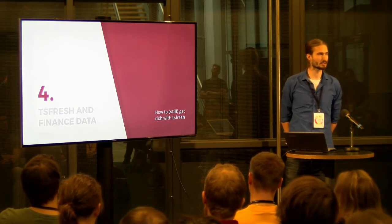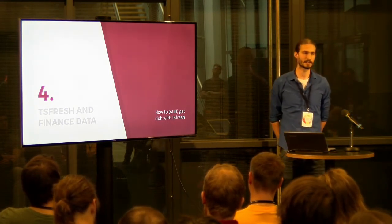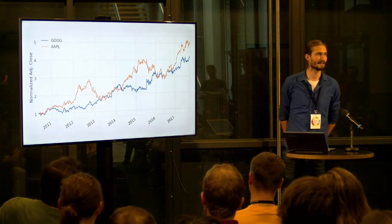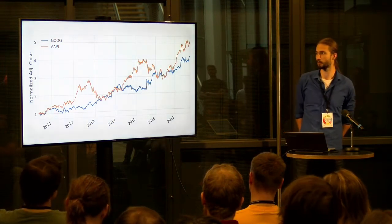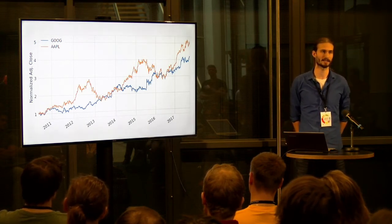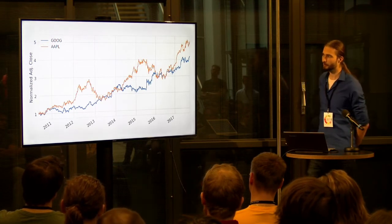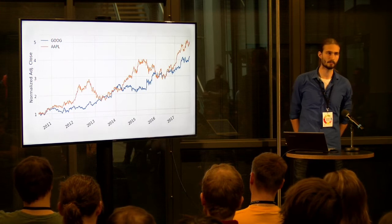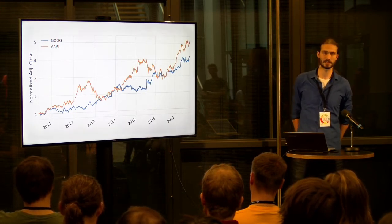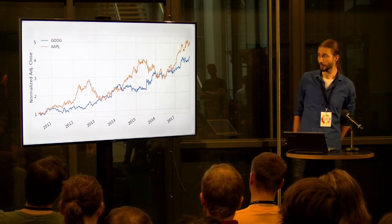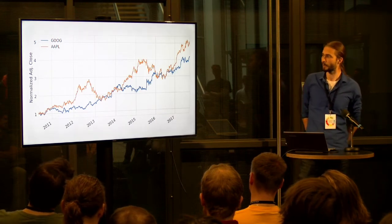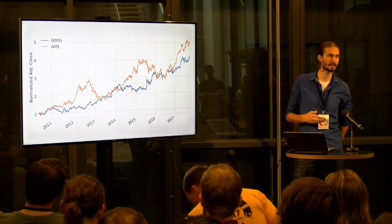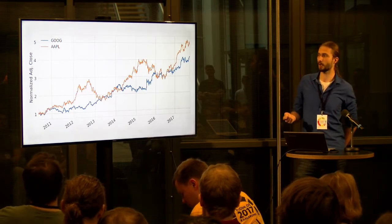I want to show you how to apply TSFresh to finance data — just a toy example, so I hope you don't invest all your money based on this algorithm. I want to do stock market prediction. We look at the Google and Apple stock over time, from 2010 to 2017, specifically the adjusted closing price — adjusted for things like stock splits. What I do is use data up to a given day, for example 1st January 2015, train my machine learning model on all the historic data, and then try to predict if the stock will be higher the next day or not. If I predict it will be higher, I buy stocks today and sell them tomorrow.